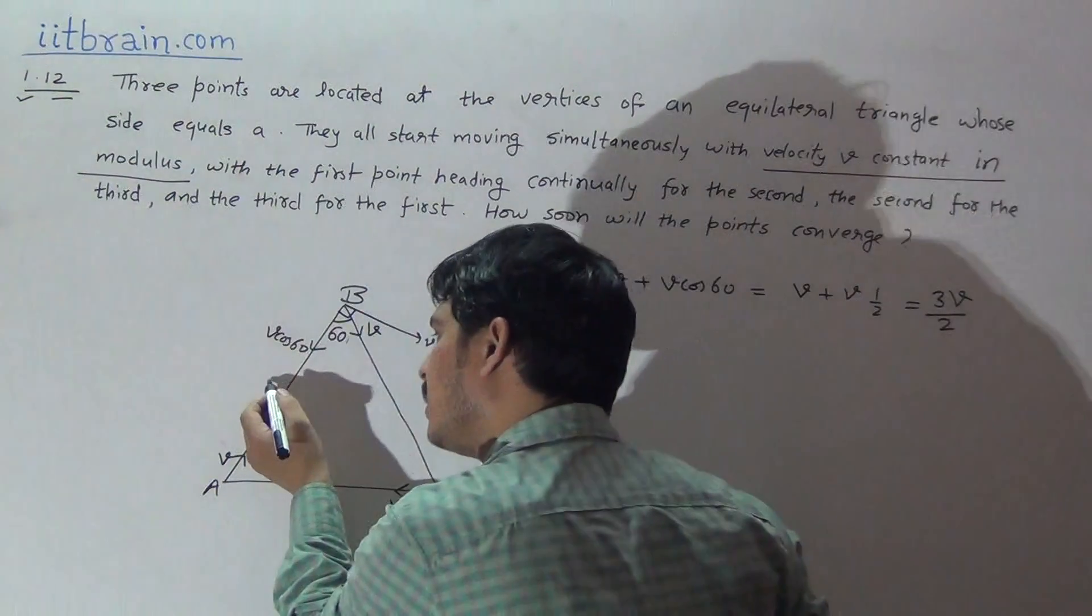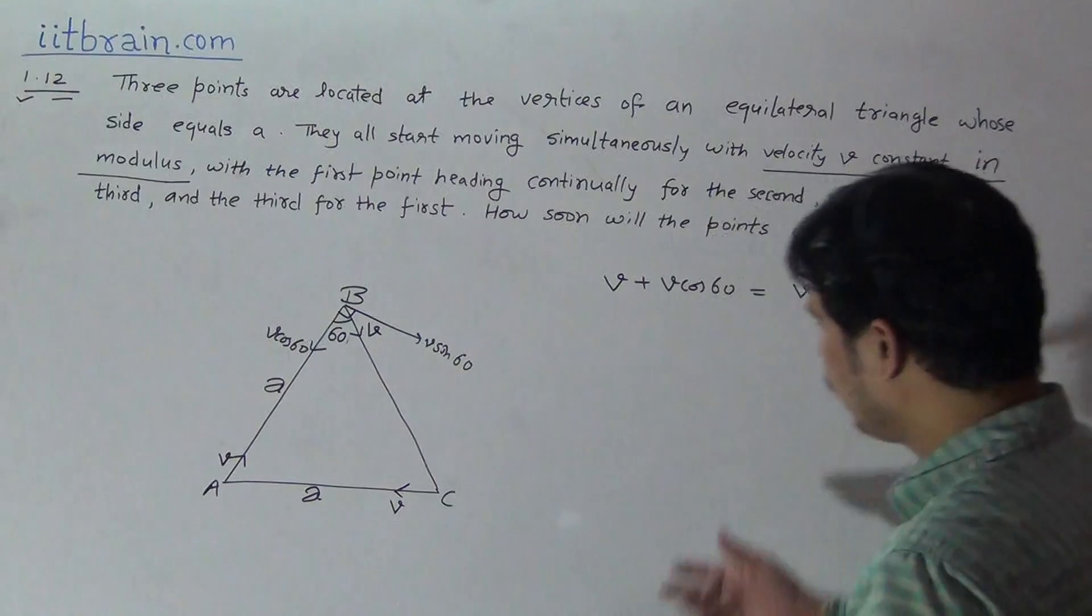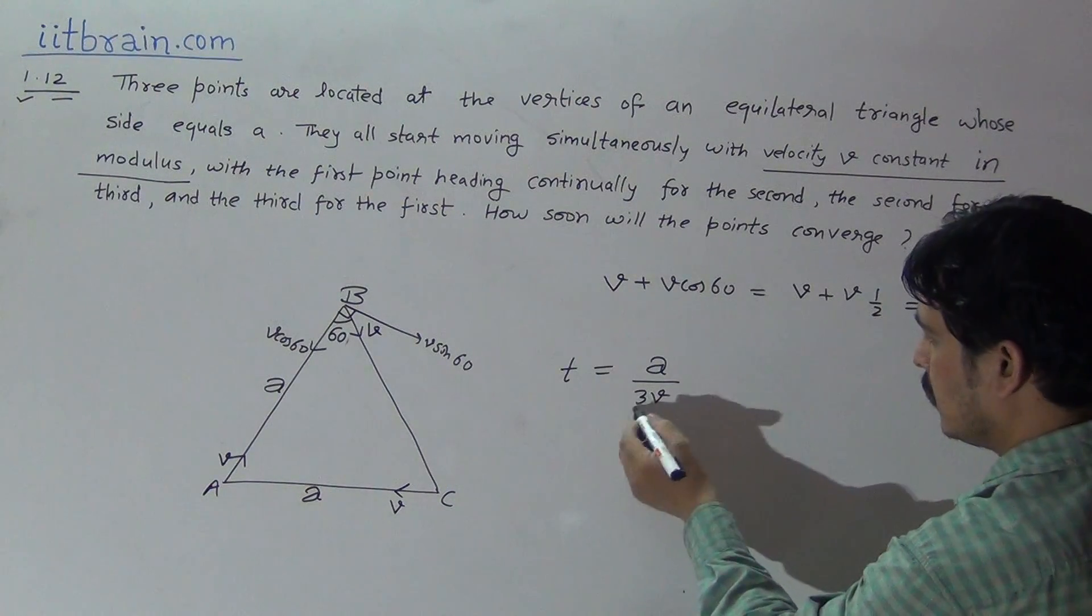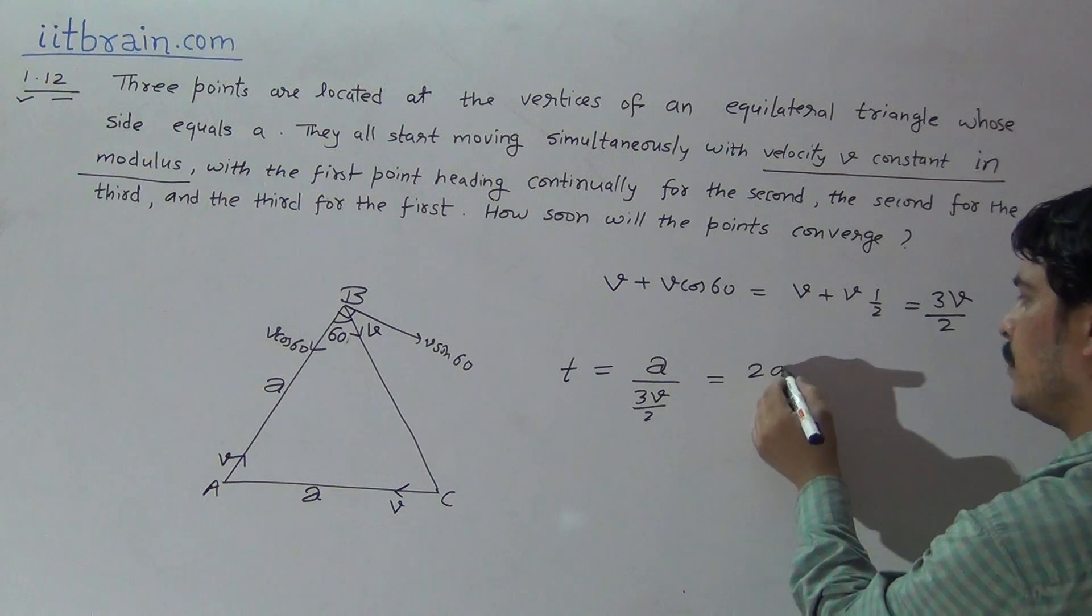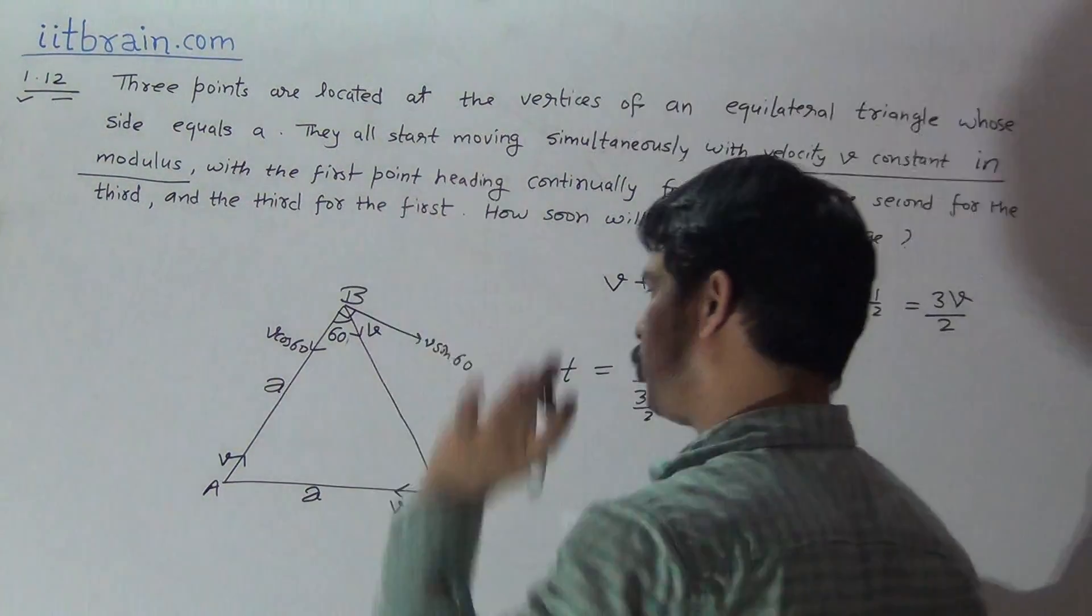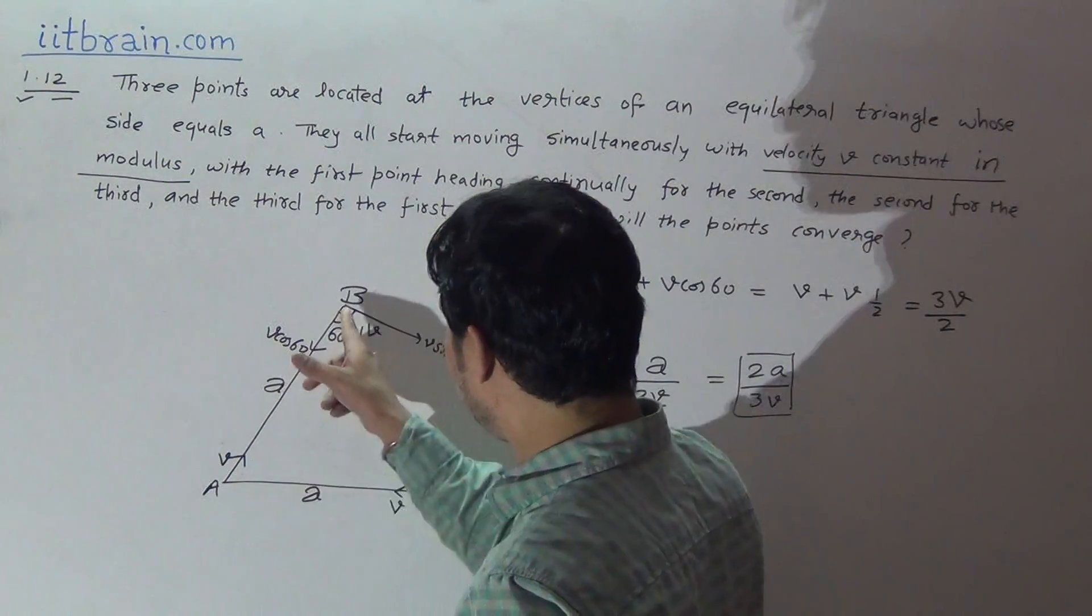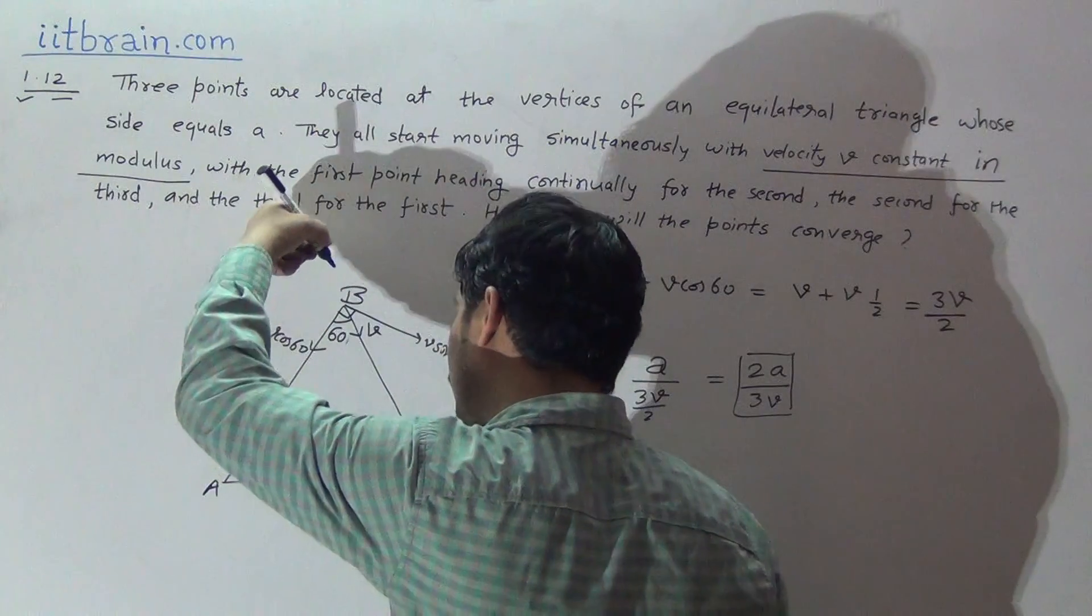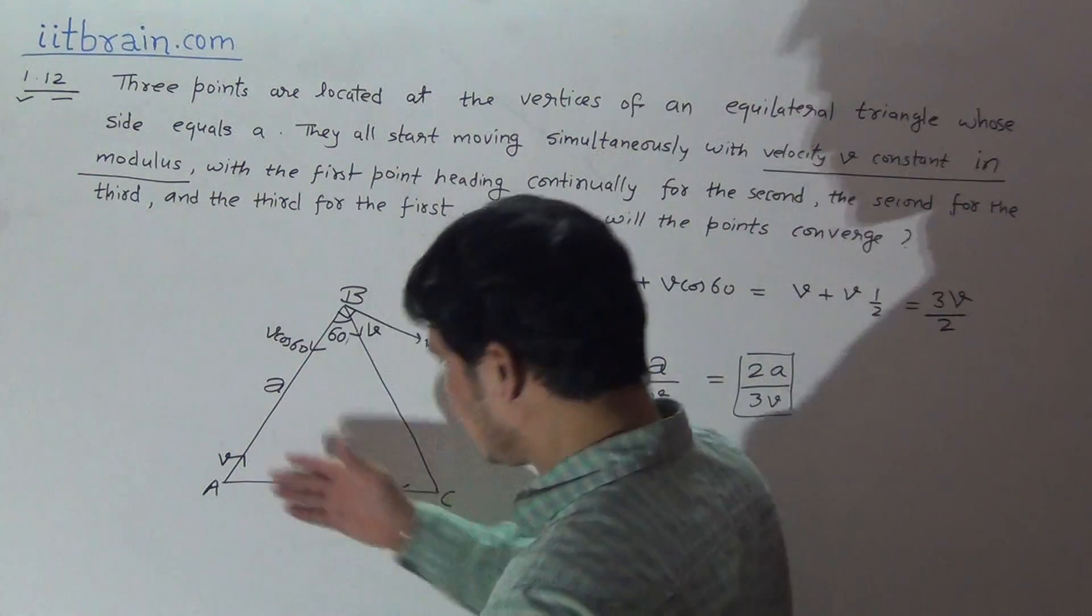This is the net resultant velocity of these two for coming together. And by this velocity, they have to cover a distance A. We know that time is defined as distance over velocity. So time taken by this will be 2A over 3V. This is the time in which A will approach up to B.